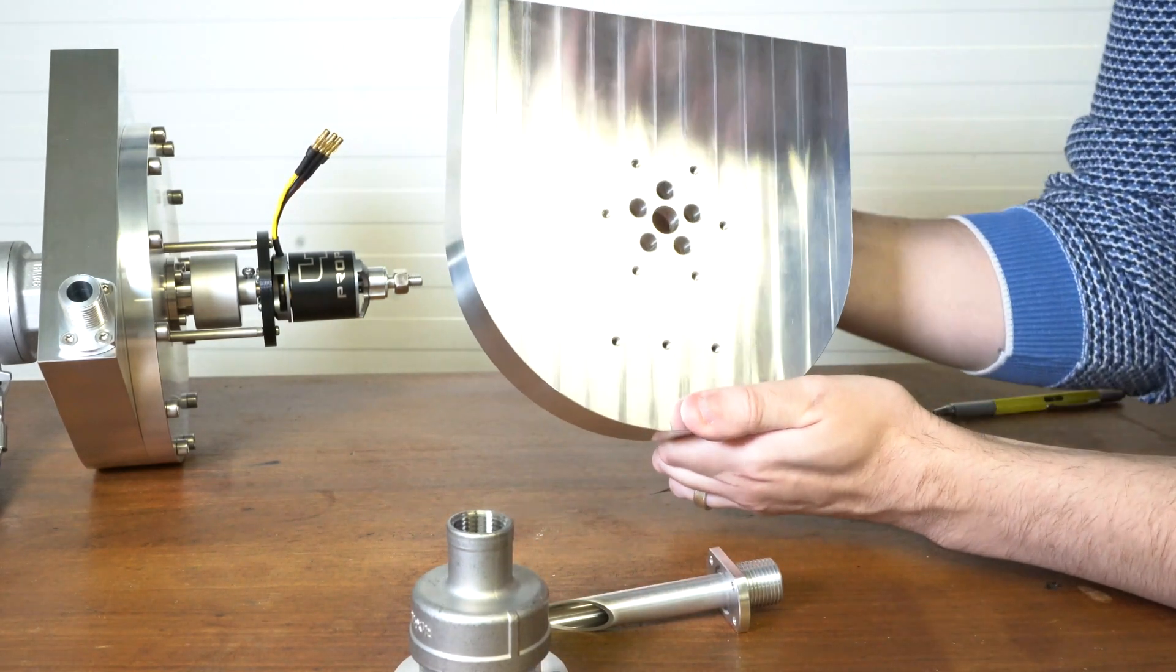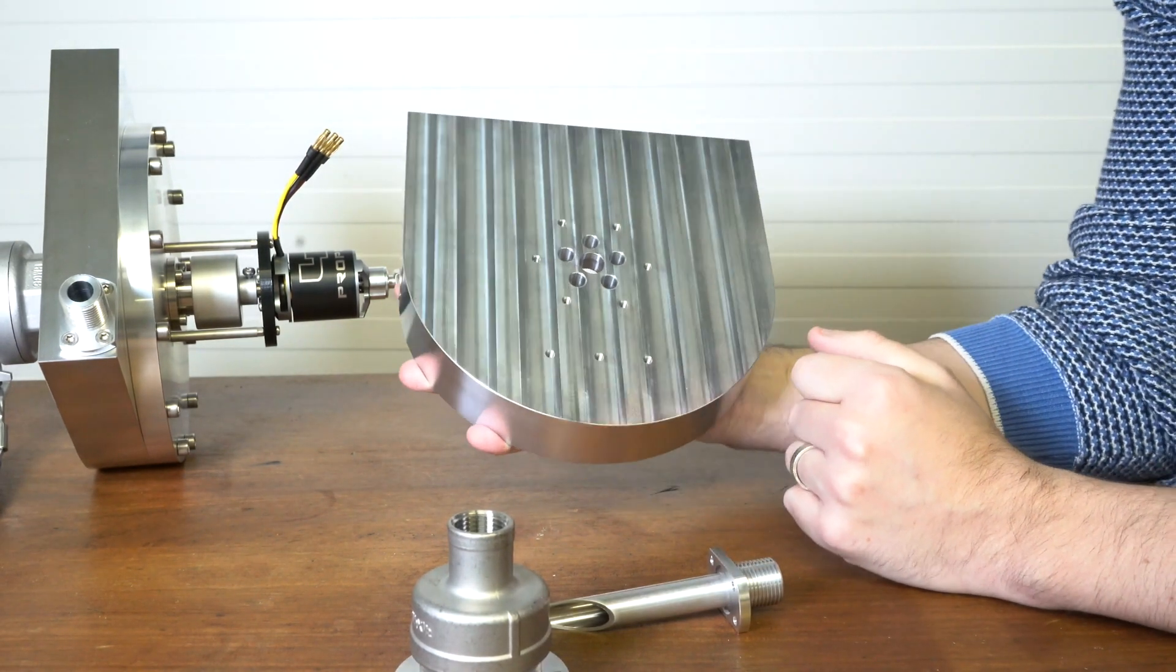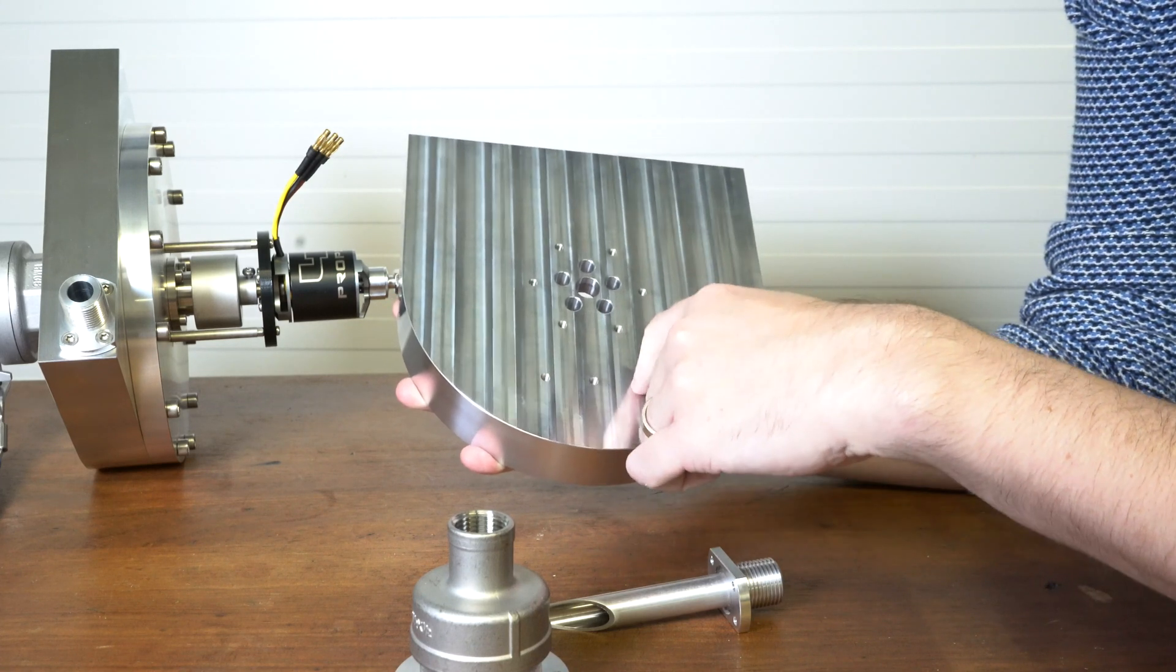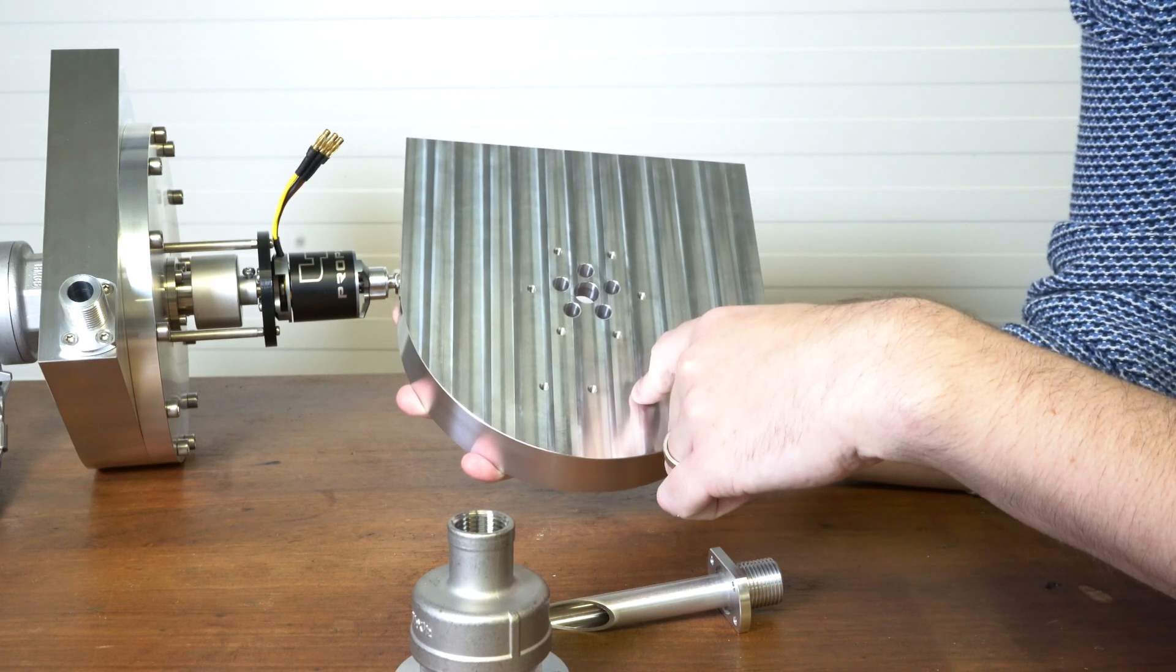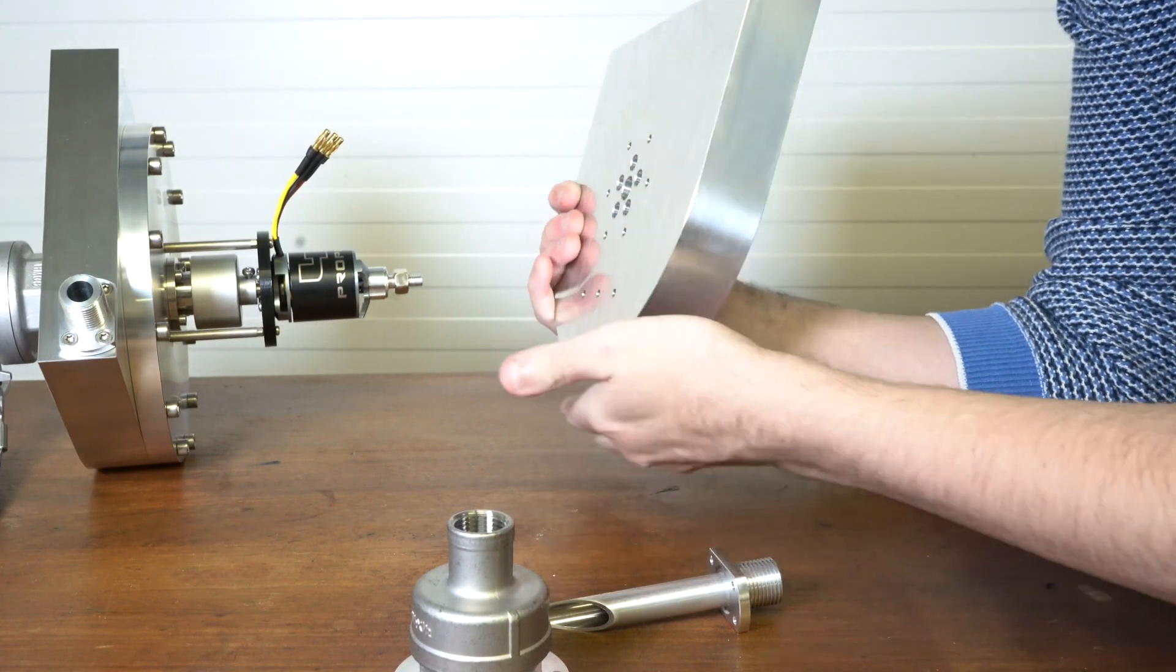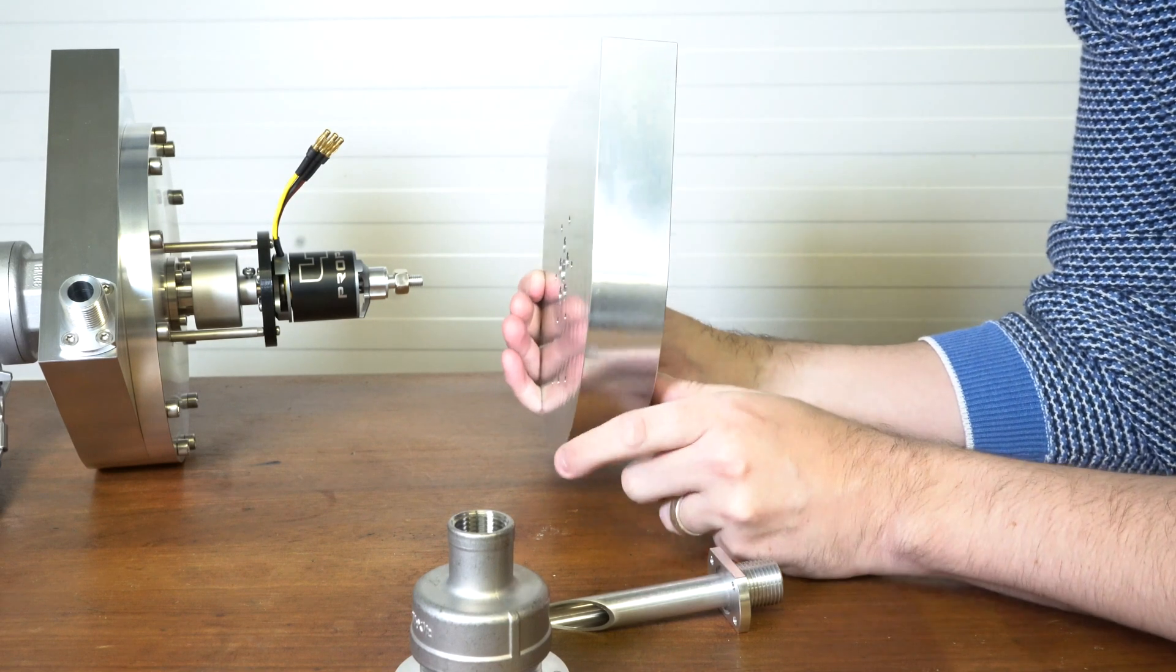Another thing to point out on the back here, we've got, this was just a last minute alteration. We've got three holes here. These are for mounting. So the idea being that you could mount the turbine against something or you could have like a little bit of angle plate and bolt it to whatever you wanted to.